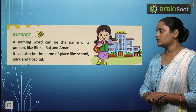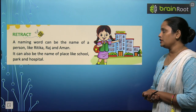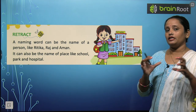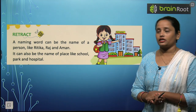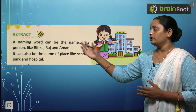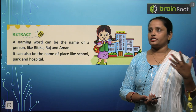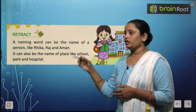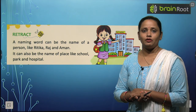What is a naming word? A naming word can be the name of a person — kisi bhi insaan ka naam. Like Ritika, Raj, and Aman. Kisi boy, kisi girl — inhein hum person kehte hain. Toh unka jo naam hai, jo parents ne diya hai, wahi hai naming word.